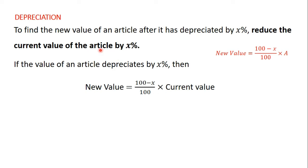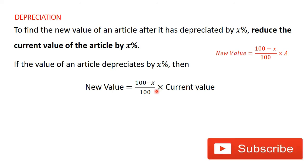So if an article depreciates by x%, then the new value of the article is equal to (100 - x) / 100 times the current value of the article. In the next video, we are going to apply what you've learnt about depreciation to solve practical problems.